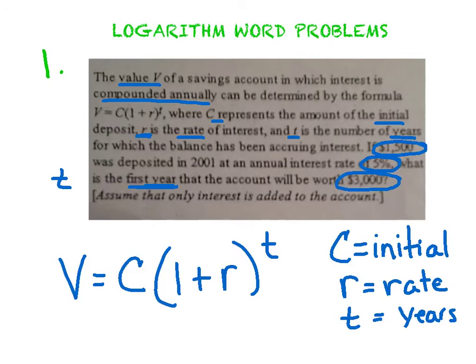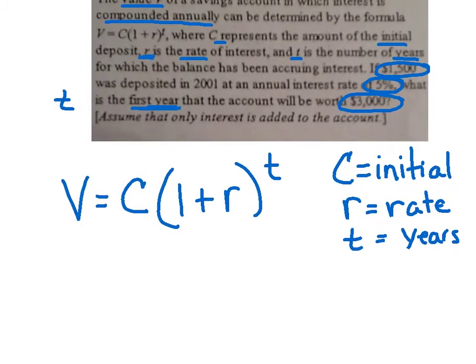So I'm going to go ahead and list some of that information out one more time. I've identified off to the side what C stands for, R stands for, and T stands for, and I'm going to jot them down one more time. The initial amount of money I put in this bank account was $1,500. And they told me there was an interest rate of 5%.